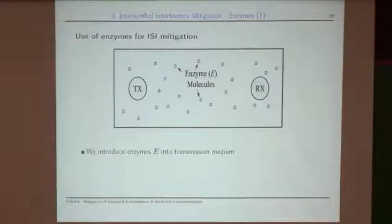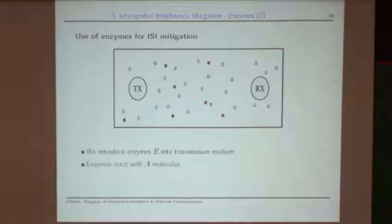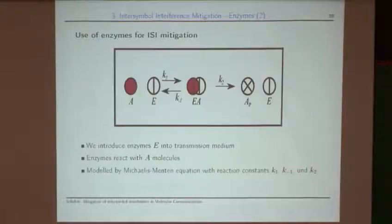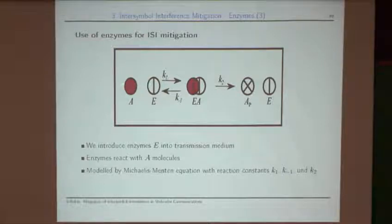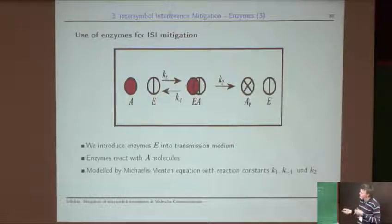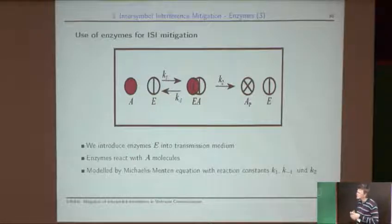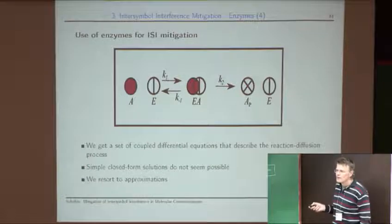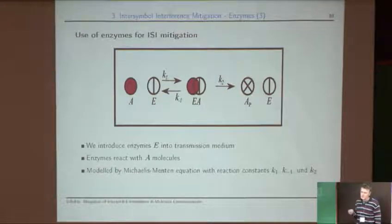We introduce enzymes uniformly distributed in the environment. Our A molecules are released, and if they come close enough to an enzyme, they react via the Michaelis-Menten mechanism: the substrate and enzyme bind with some probability, then either unbind or react, causing the enzyme to degrade the A molecule into an A-prime molecule that the receiver cannot count. We assume the receiver is specific enough to detect only A molecules, not A-prime. The enzyme can be reused many times.